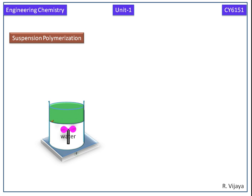The monomers are water insoluble. The monomer contains an initiator, represented in red color. Then we add a suspending agent.